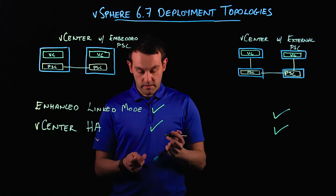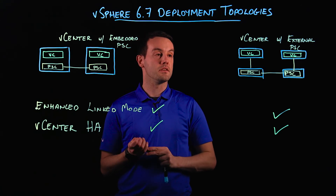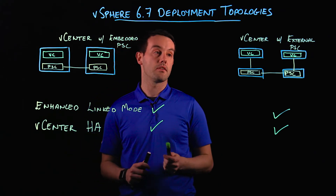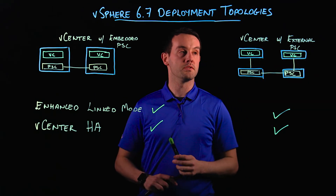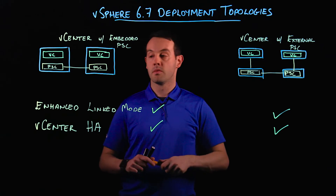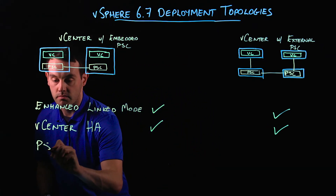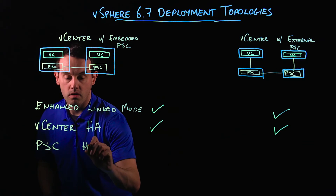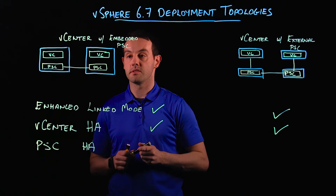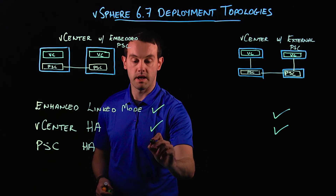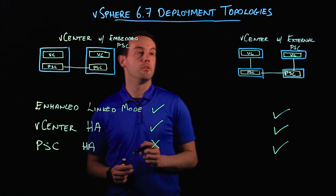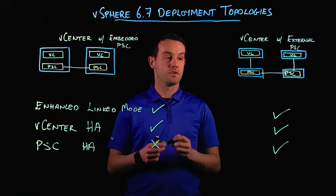When running vCenter HA with an external PSC, it's important to note that we're only protecting part of the vSphere stack — we're only protecting the vCenter layer. So to protect the PSC layer, we still have PSC HA with a load balancer. PSC HA is not available for vCenter with an embedded PSC, because the PSC is embedded and contained within the vCenter node. PSC HA is only available for vCenter with an external PSC.